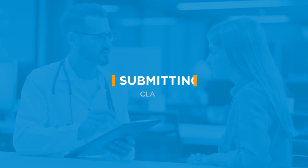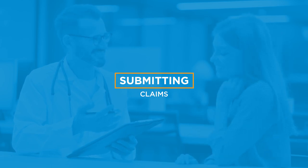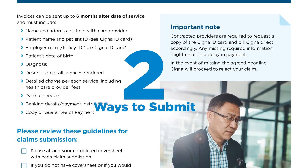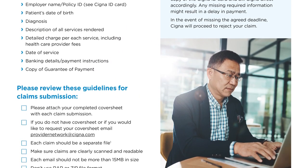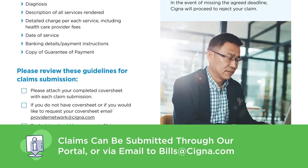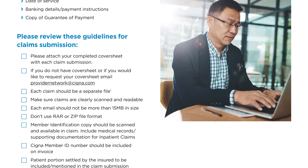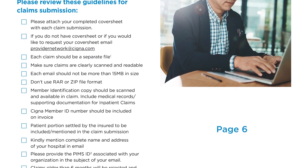After you've provided the required services and your patient has paid the deductible, co-payment, or co-insurance if one is specified by his or her plan, you are ready to submit the invoice to Cigna Global for processing. There are two ways to submit a claim: you can use our Cigna Envoy portal or send an email to bills at cigna.com. More information is on page 6 of our provider manual.